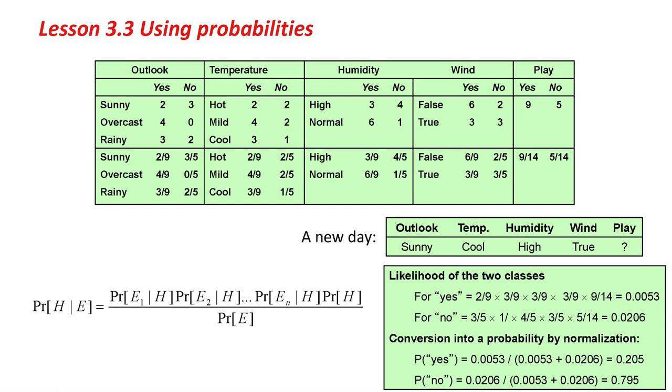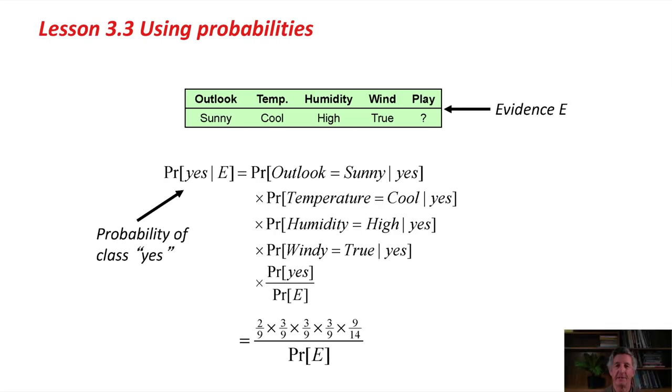That's how we get the probability of play on a new day with different attribute values. Just to go through that again, the evidence is outlook is sunny, temperature is cool, humidity is high, windy is true. We don't know what play is. The probability of a yes given the evidence is the product of those four probabilities, one for outlook, temperature, humidity, and windy, times the prior probability, which is just the baseline probability of a yes. That gives us that product of fractions divided by P(E). We don't know what P(E) is, but it doesn't matter because we can do the same calculation for P(No), which gives us another equation just like this. Then we can calculate the actual probabilities by normalizing them so that the two probabilities add up to 1. It's actually quite simple when you look at it in numbers.